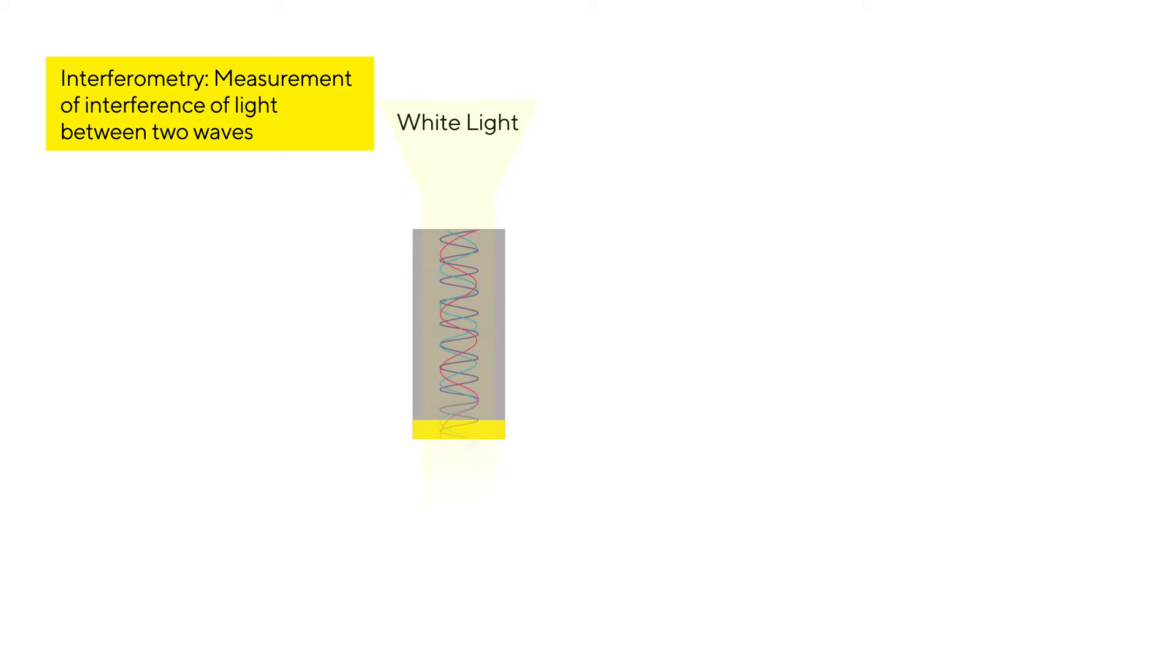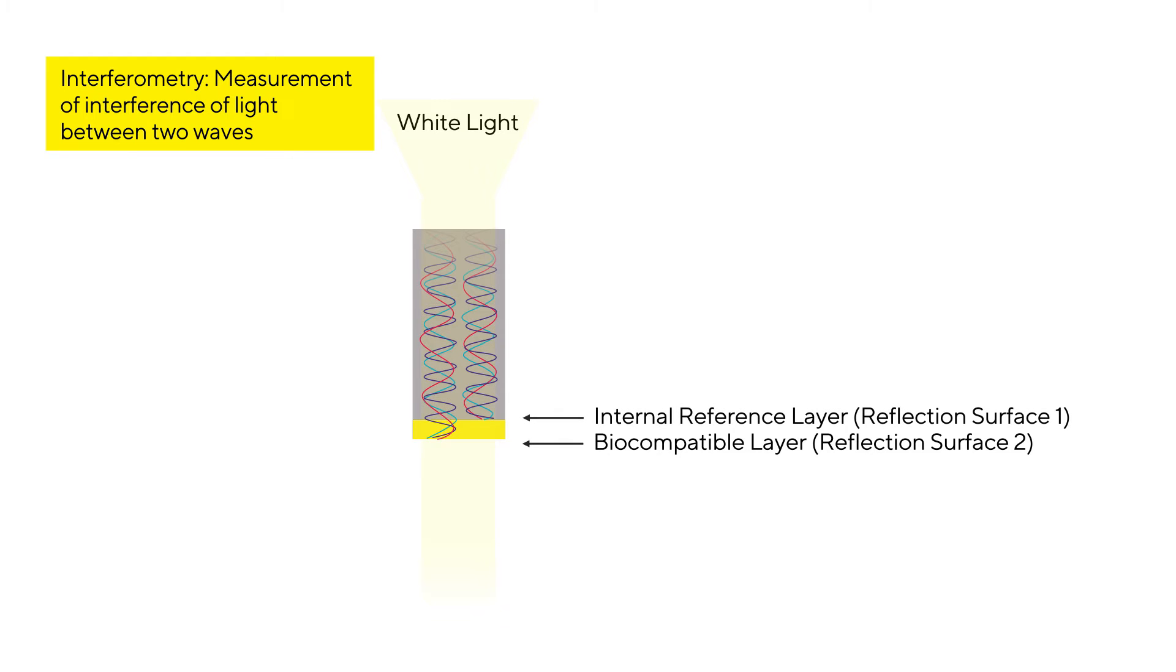BLI measures light interference originating from the tip of the biosensor surface, where light wavelengths are made to reflect from two layers—a biocompatible layer at the end of the biosensor surface and an internal reference layer.